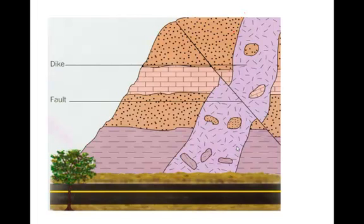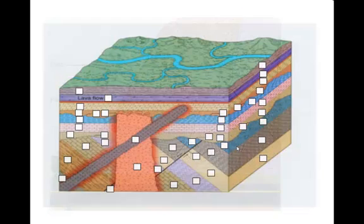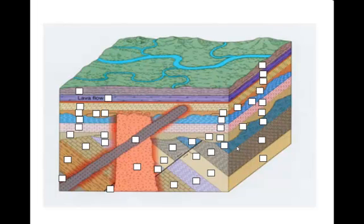See if you can figure out the order of these rocks — label them A, B, C, D, E, and F, including the fault. A dike is another word we use to refer to an intrusion. Try to put these in order from youngest to oldest. You can pause this and give it a try. The next diagram — see if you can put that one in order too. We're going to talk about this in class as well.